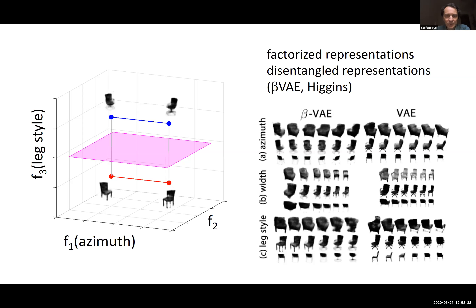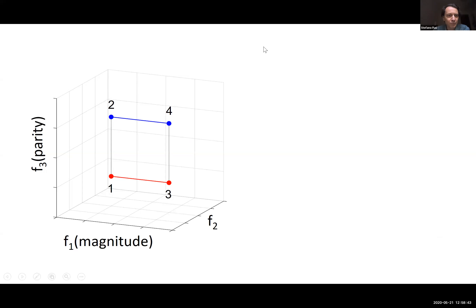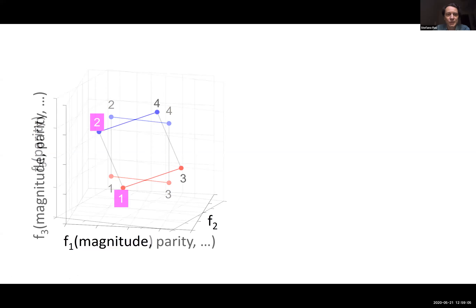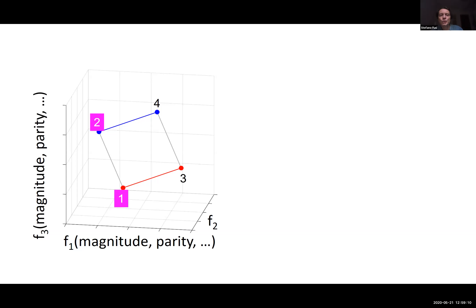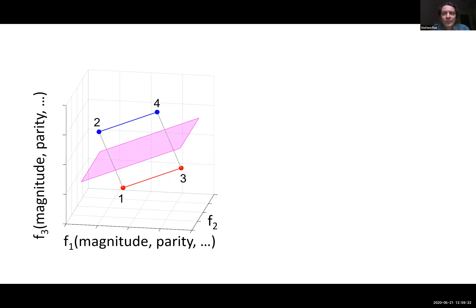Going back to the simple parity-and-magnitude example: we never see these highly specialized neurons that encode only one factor in the brain. However, you can take these representations and rotate them in the original high-dimensional space, so each individual neuron encodes multiple variables — magnitude and parity — while preserving all generalization properties. Since it's a linear transformation, a linear decoder will still have the same cross-condition generalization: train on one and two, generalize to three and four.